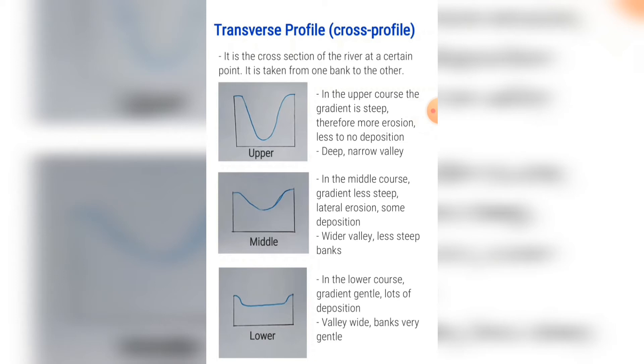In the middle course the gradient is less steep and there is more lateral erosion. Some deposition takes place especially when the meanders start occurring. The valley is wider and the banks are less steep.